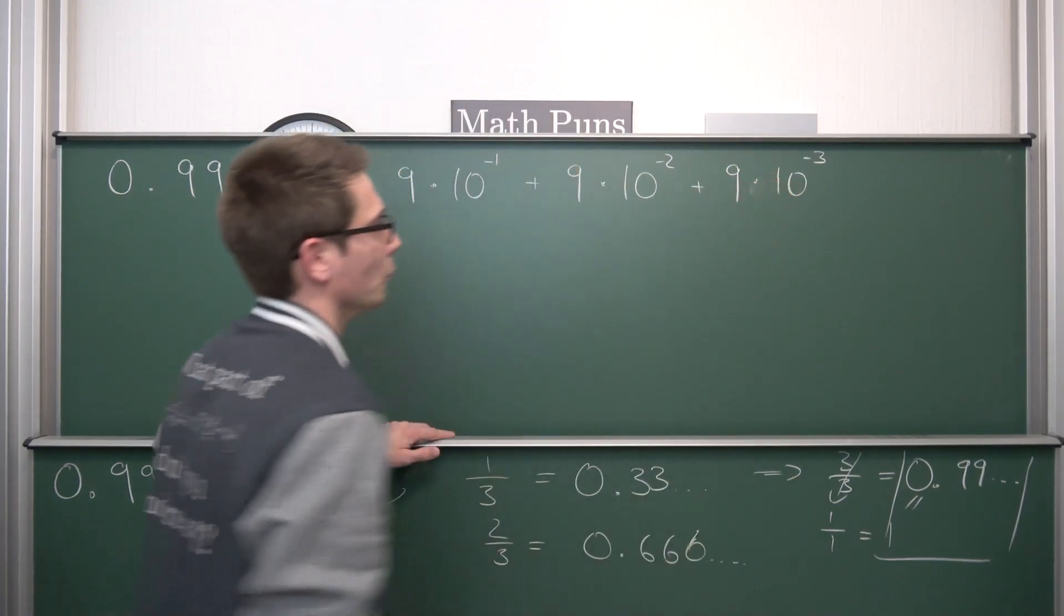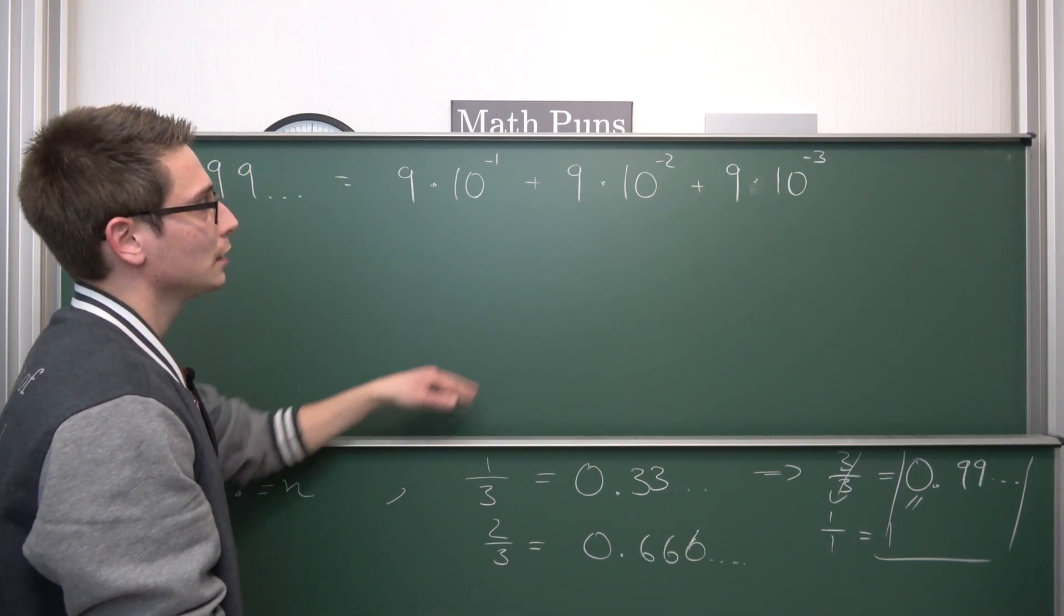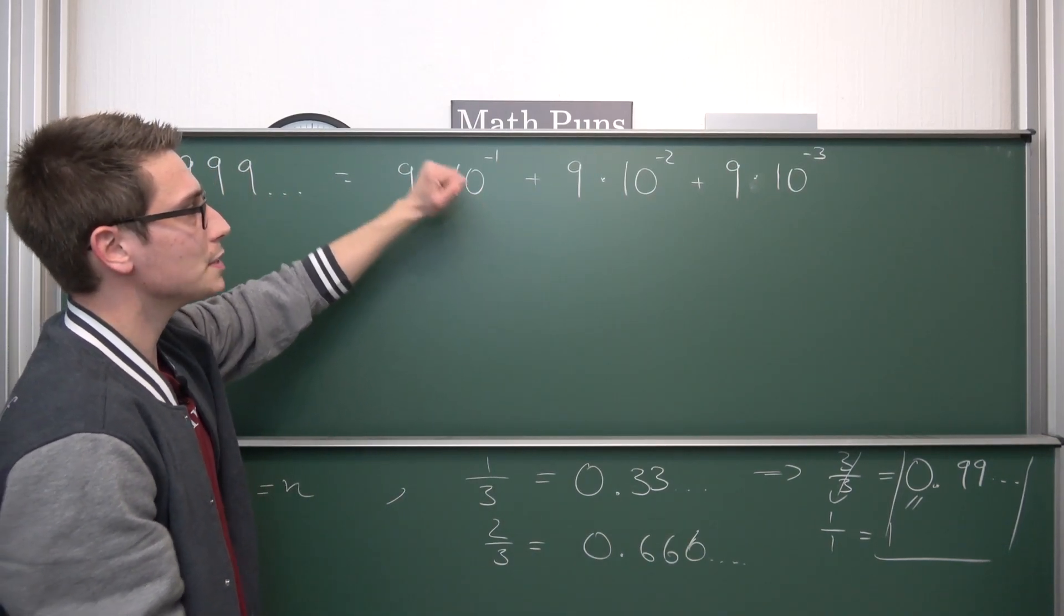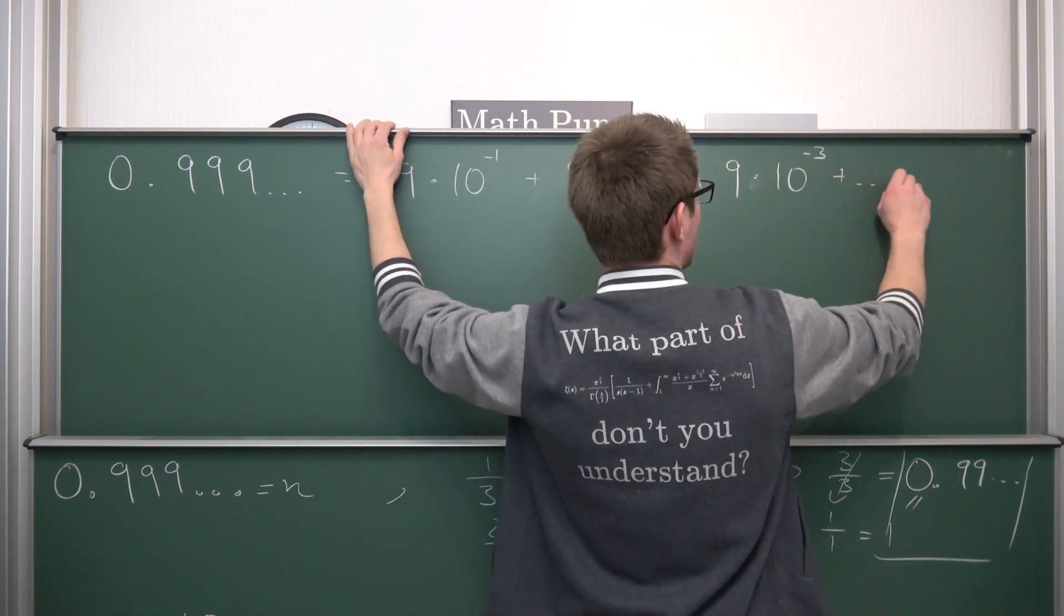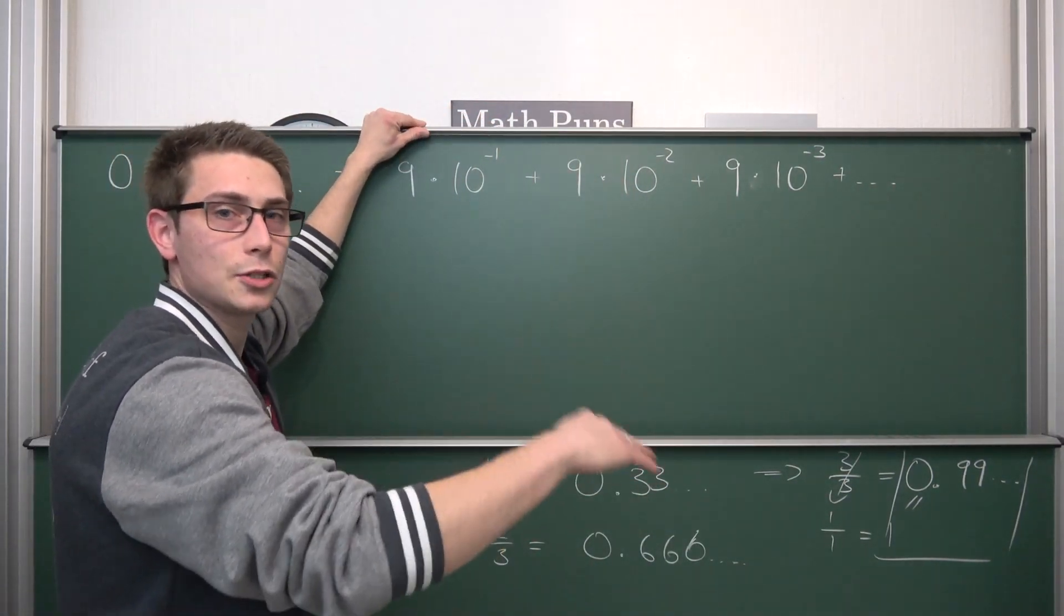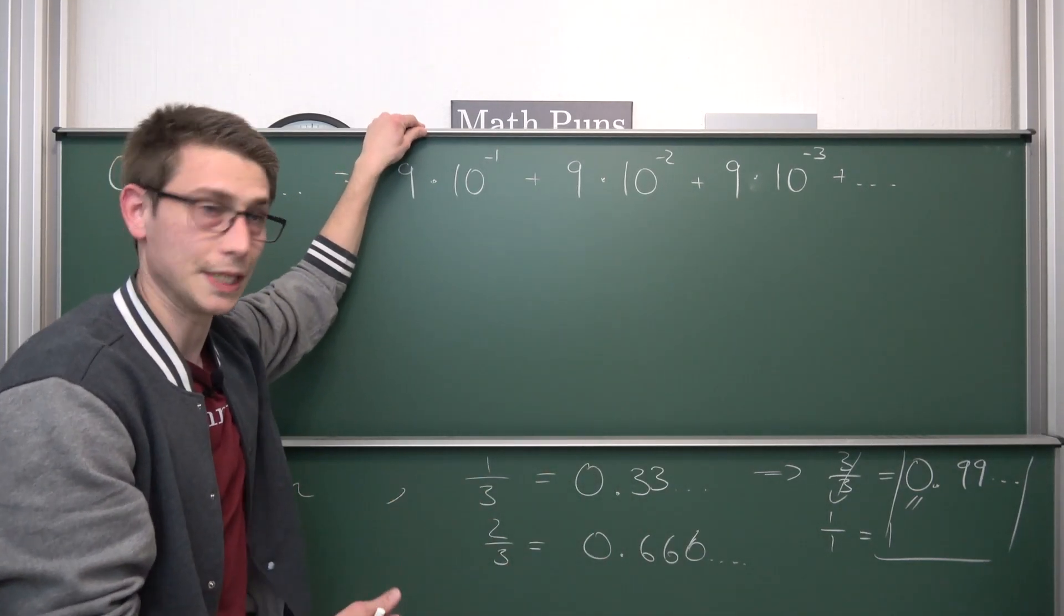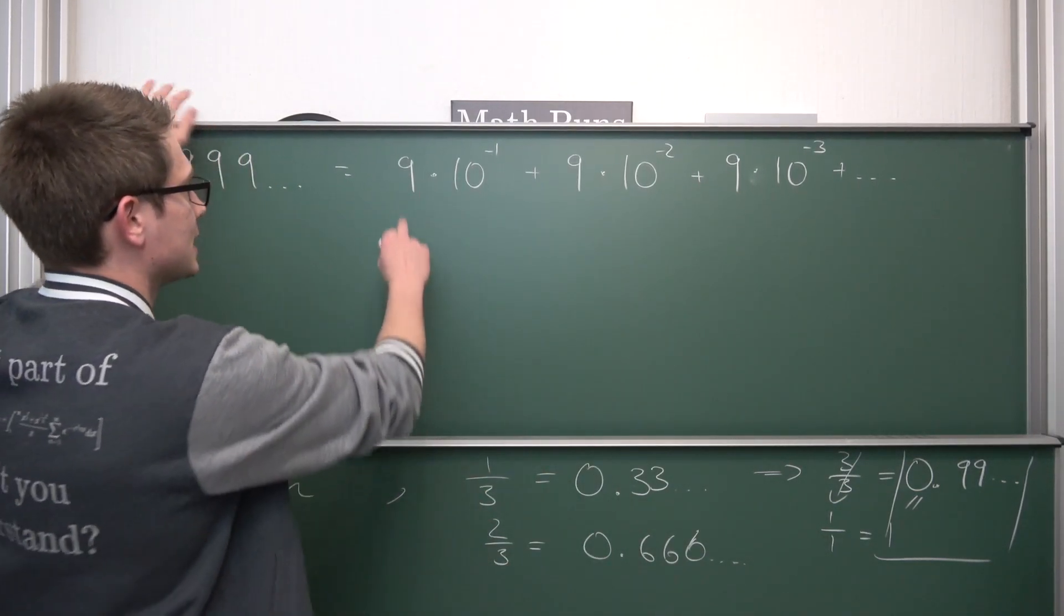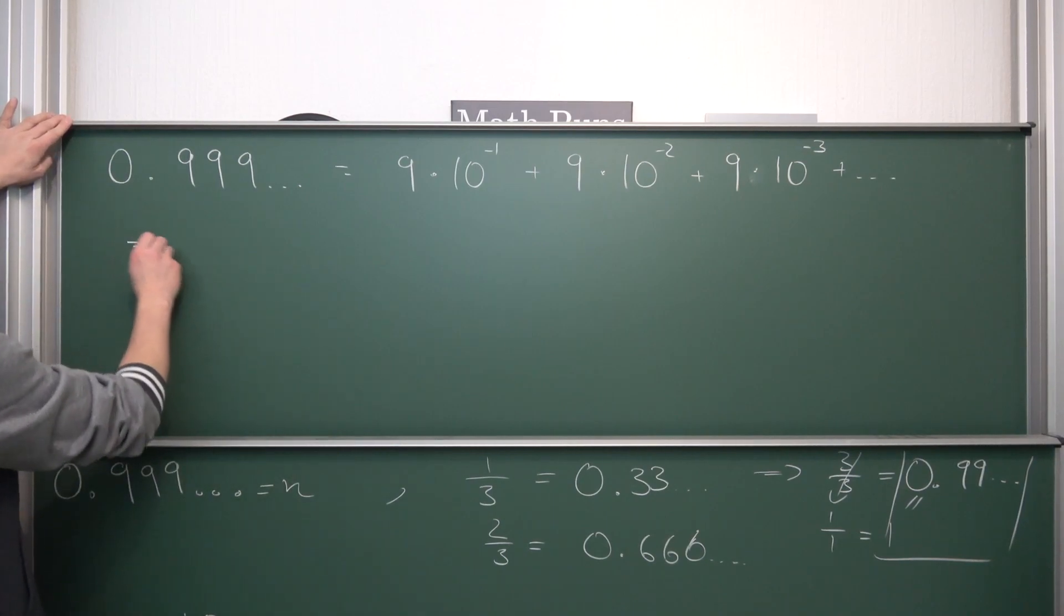So this number that we have right here is 9 times 10 to the negative 1 power. Then what we got left is that we have to add to it 0.09999... repeating. If we want to represent the 0.09 once again like this, we are going to have that this is 9 times 10 to the negative 2 power. So plus 9 times 10 to the negative 2 power, and so on and so forth. We can add all the other terms to it. This is a multiplicative composition of numbers, and so on we can do this up until infinity. This is just a decomposition into infinitely many terms.